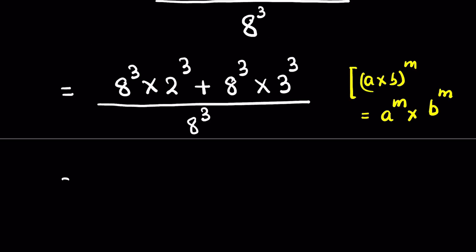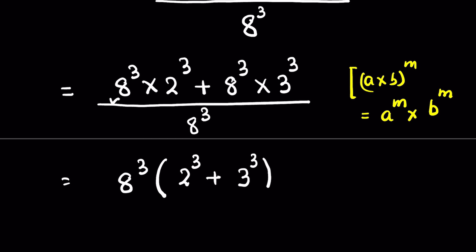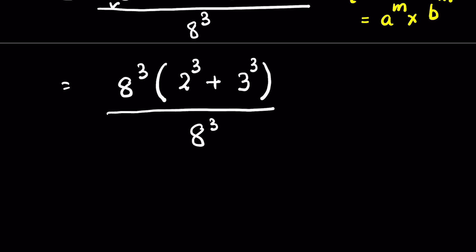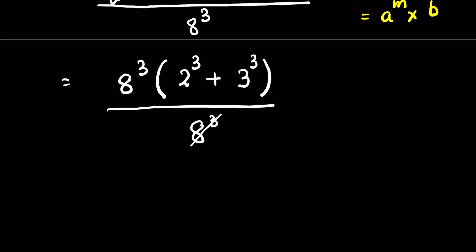Now we can take 8 raised to the power 3 as common: 8 raised to the power 3 times bracket 2 raised to the power 3 plus 3 raised to the power 3, upon 8 raised to the power 3. We can now cancel 8 raised to the power 3.